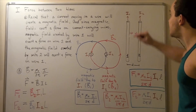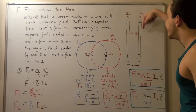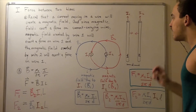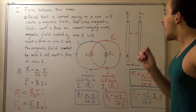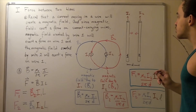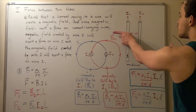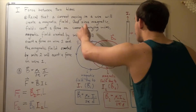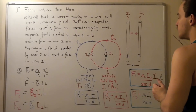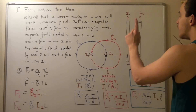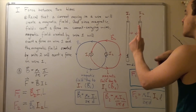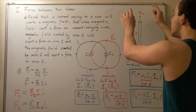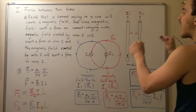Now suppose we change one current to flow downward, so one current goes up and the other goes down. Using the right-hand rule, we find the forces now point away from each other. So if two parallel wires have currents in opposite directions, they repel each other. But if both currents flow in the same direction, the wires attract each other.